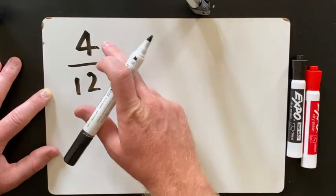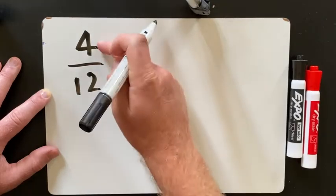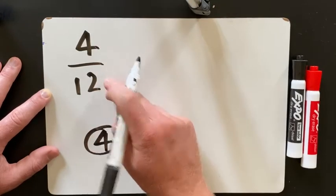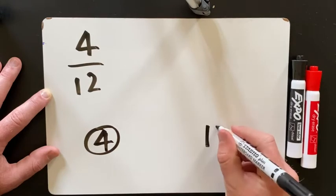So all you do is you take the numerator, which is a 4 in this example, we put it here, 12, which is the denominator, put that here.